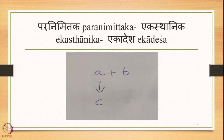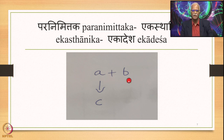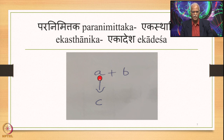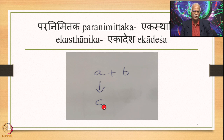Then we have Paranimittaka Ekasthanika Ekadesha, where we have A plus B in close proximity in the Samhita mode, and in the environment of B which is Para, A is Purva over here, A is replaced by C. A is substituted by C, A is the Sthani, C is the Aadesha. A plus B is the input and C plus B is the output.